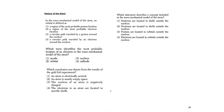Let's go to the questions. In a wave mechanical model of the atom, an orbital is defined as a region of the most probable electron location. The term that identifies the most probable location in this model is the orbital.